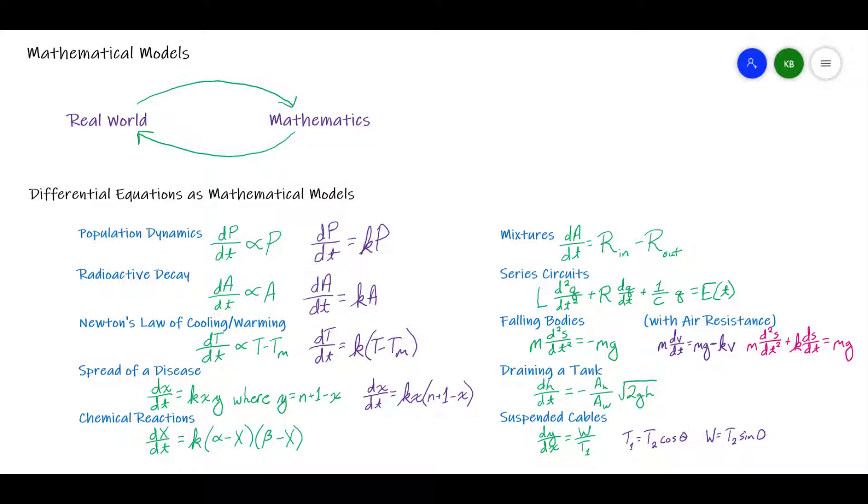We can get numbers as answers, we can get other equations as answers, whatever our goal is. So we'll do all of this in this mathematics realm. And then once we have the solution that we desire, we're going to translate it back into the real world and check and make sure that it actually makes any kind of sense in the real-world context that the problem was given in.